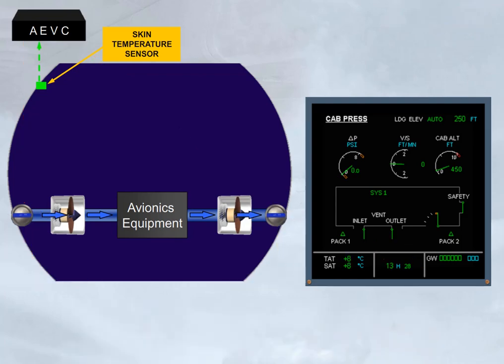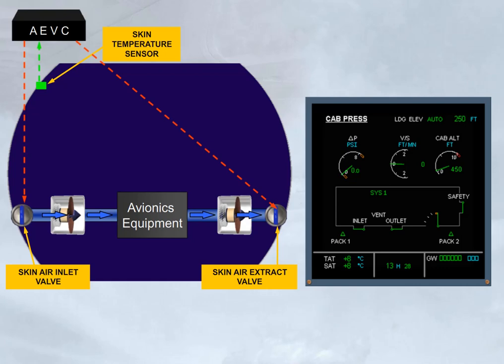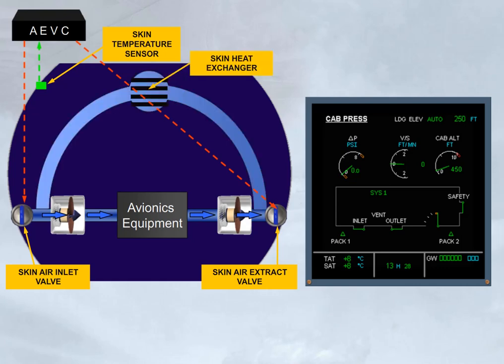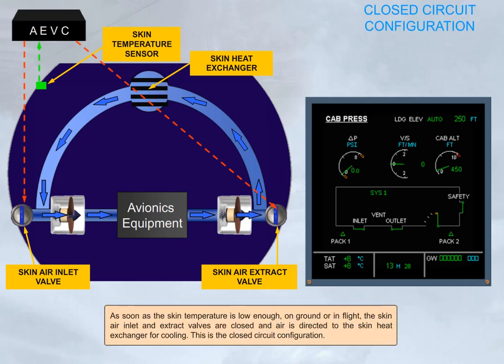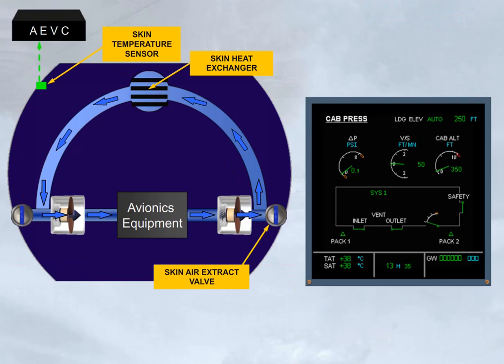As soon as the skin temperature is low enough, on ground or in flight, the skin air inlet and extract valves are closed, and air is directed to the skin heat exchanger for cooling. This is the closed circuit configuration. On ground with thrust at takeoff, or in flight, if the skin temperature is high, a small flap opens in the closed extract valve. This is the intermediate configuration.